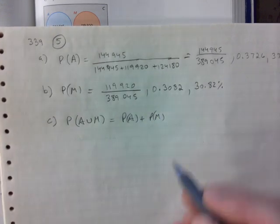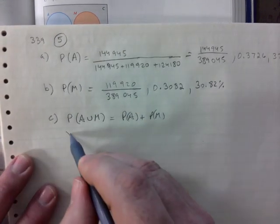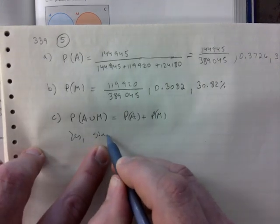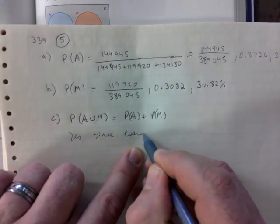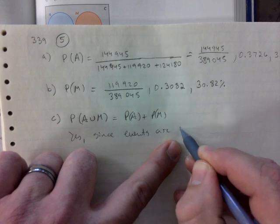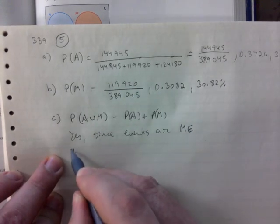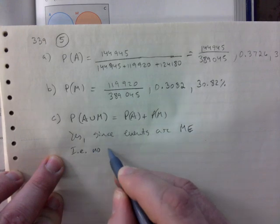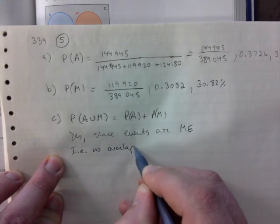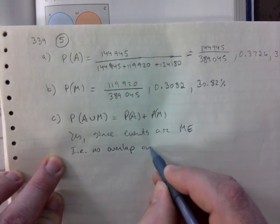You would have to say yes. Are you with me? So it's asking A union M, is it P(A) and P(M)? The answer is yes, since events are mutually exclusive.